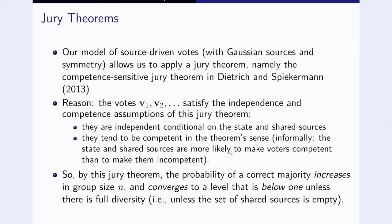Maybe also interesting, once we make these two assumptions, we have a link to our jury theorem. Our model of source-driven votes with Gaussian sources and symmetry allows us to apply a jury theorem, namely the competence-sensitive jury theorem. The reason, roughly, is that the votes satisfy the independence and competence assumptions of this particular jury theorem. They are independent, conditional on the state and the shared sources, and they tend to be competent in the theorem sense. Very informally, the state and the shared sources are more likely to make voters competent than to make them incompetent. The good news is, with these simplifying assumptions, the probability of a correct majority increases in group size n, and converges to a level that is below one, unless there is full diversity, if the set of shared sources is empty.